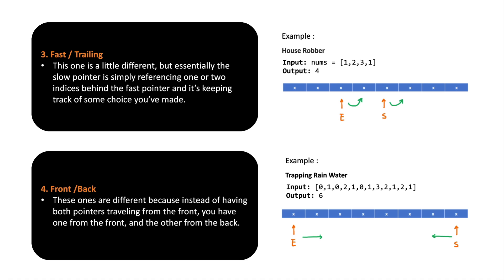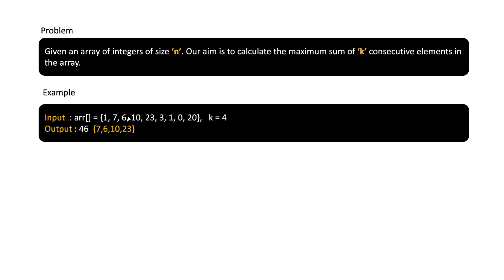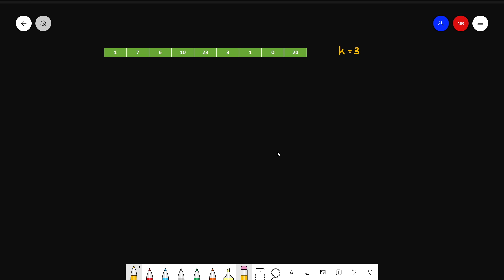Those are the four different variations of the sliding window. Now let's understand sliding window with one example and compare it against the normal approach. The problem: given an array of integers of size n, calculate the maximum sum of k consecutive elements in the array. For example, given an input array with k equal to four, the output is 46 — elements 7, 6, 10, and 23 — which gives the maximum sum.